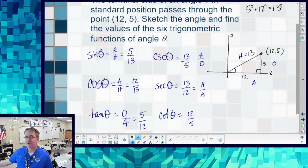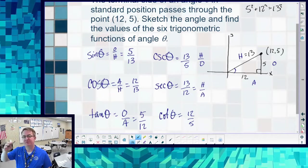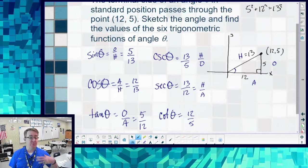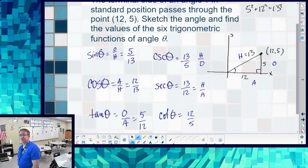Tangent, opposite over adjacent, can always be bigger than 1. So you have 5 over 12. And then cotangent is going to be 12 over 5. Write out the parts. Just get into the habit so that when we get to tougher stuff, you don't have to worry about focusing on that.